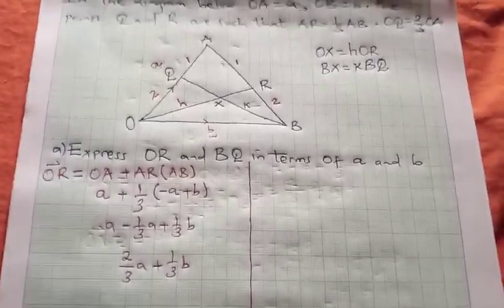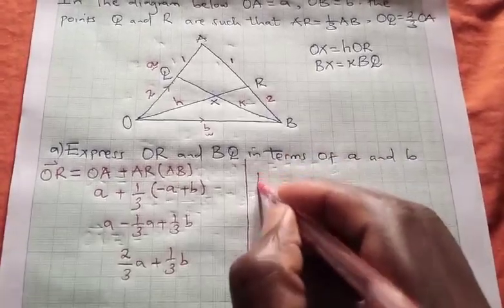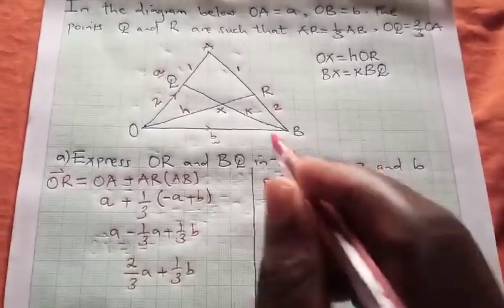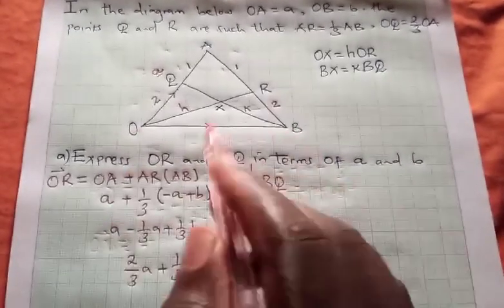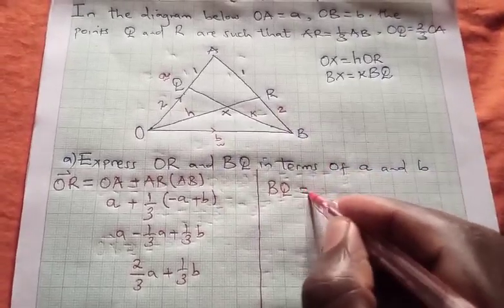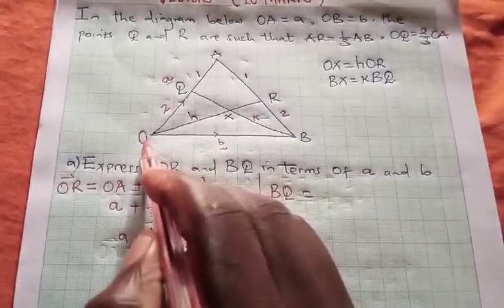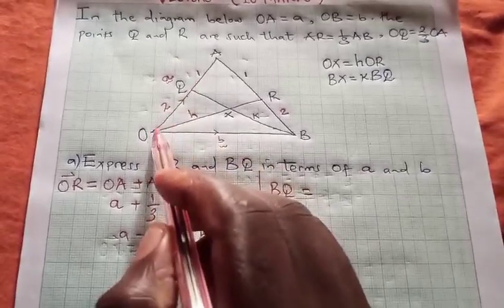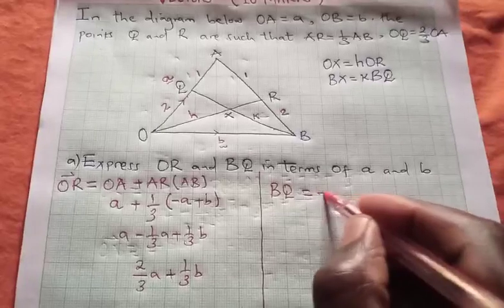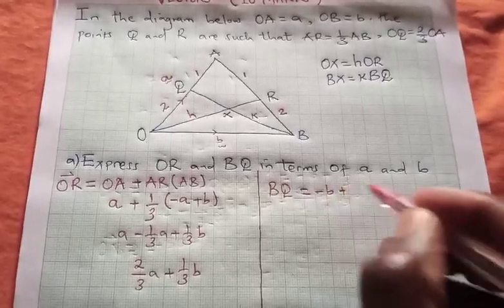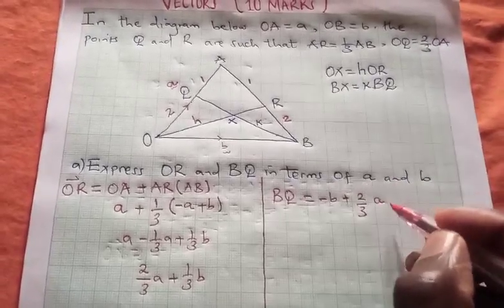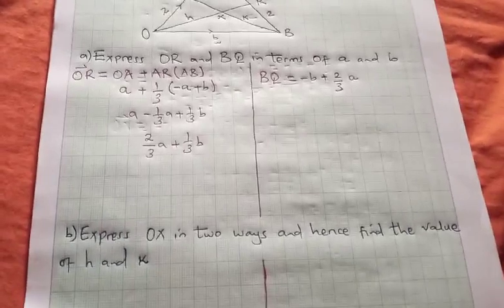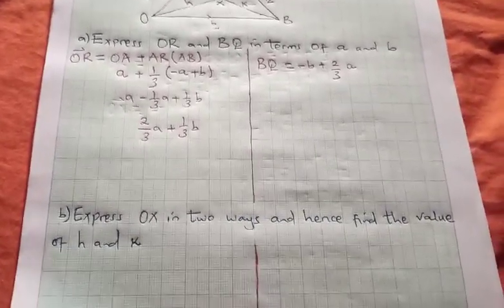Let us proceed to BQ. BQ, we are starting from B, we are moving to Q, and this time round we are going against the arrow. So we will move from B to O, then OQ. Now this is negative b plus 2/3, what is OA? It is vector a. And we are done with that part.